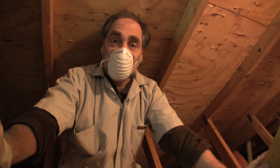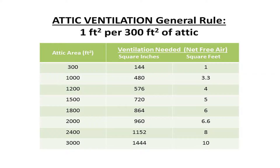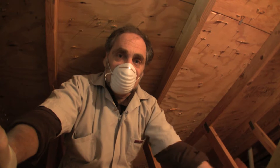One square foot of net free air per 300 square feet of attic space. That was calculated as the optimal amount of ventilation to keep moisture down and to allow the heat to move out of your attic.